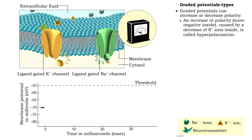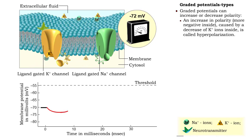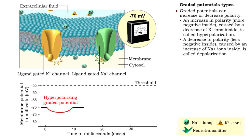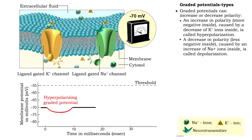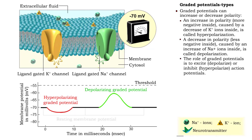An increase in polarity is known as hyperpolarization. A decrease of potassium ions inside the cell makes the cytosol relatively negative. A decrease in polarity is known as depolarization. An increase of sodium ions inside the cell makes the cytosol relatively positive. The role of graded potentials is to excite or inhibit action potentials.